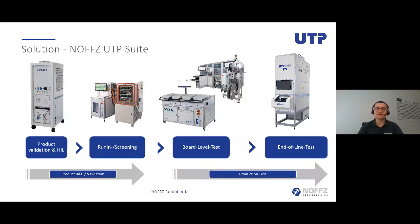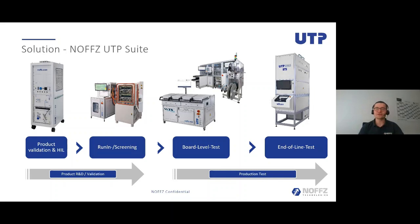UTP is short for Universal Testing Platform. It's the platform we use at NOFTS for validation and production testing, starting from R&D through end-of-line testing. Every system shown on this slide runs on the same software platform, which we call the UTP Suite. This makes development, operation, and maintenance much easier — every machine runs on the same software. The software finds its place in different branches: automotive, transportation, consumer electronics, and telecommunication.